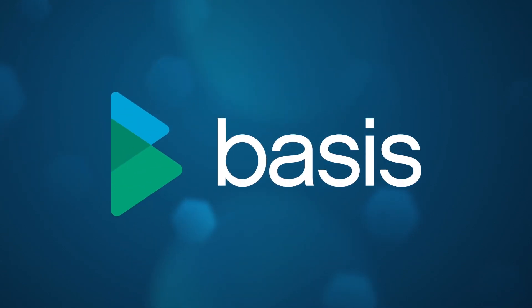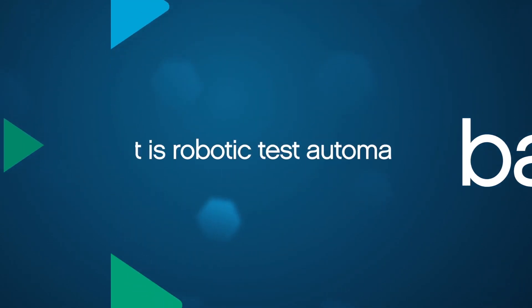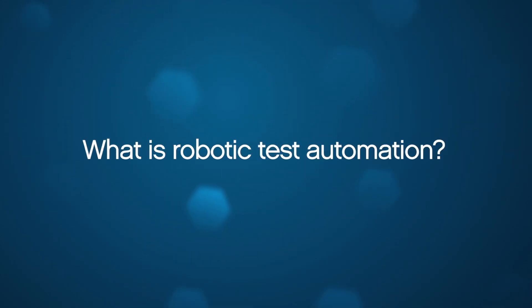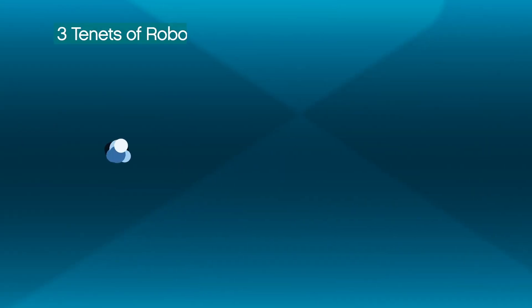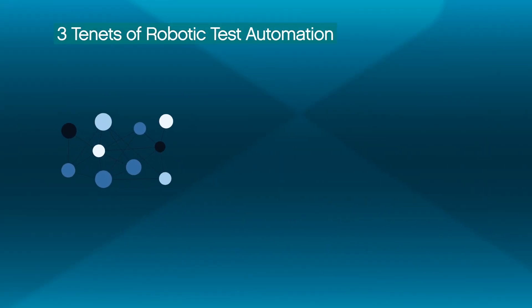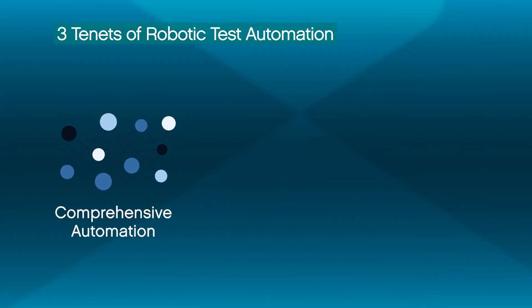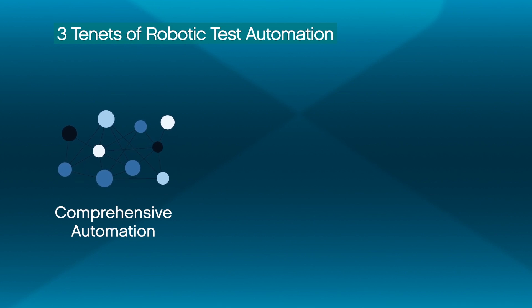Welcome to Basis Technologies. What is robotic test automation? There are three tenets of robotic test automation. Unlike traditional testing approaches, it tests beyond the user interface to deliver comprehensive automation.